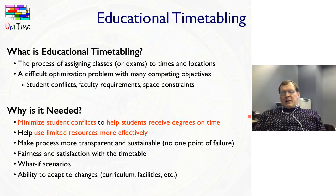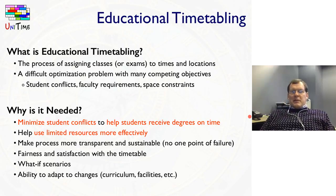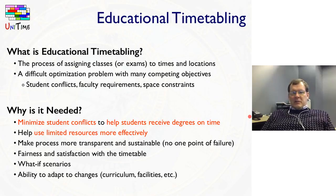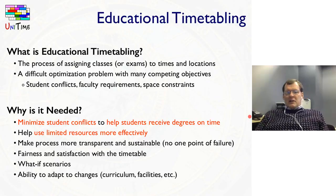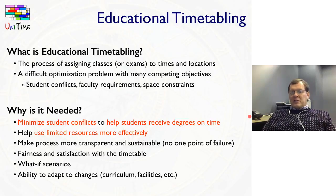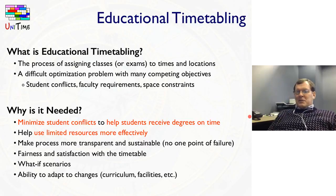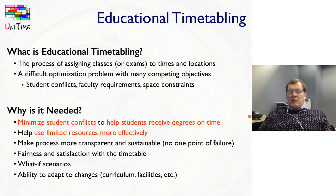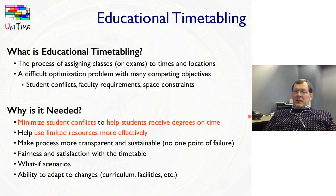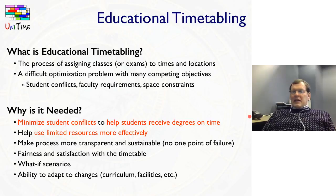Why is this a needed project? The major criteria was trying to minimize student conflicts and help them gain their degrees on time. This is a major concern, particularly now in most state institutions. Our state has even passed a law requiring students to be able to get their courses within four years, or the institution is responsible for providing those courses at no cost. The other major reason is to make use of limited resources more effectively. The cost of building classroom facilities and any time lost due to wasted sections that aren't at times meeting student needs are costs to institutions that need to be minimized.